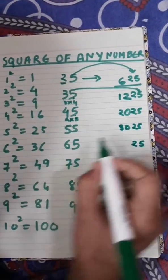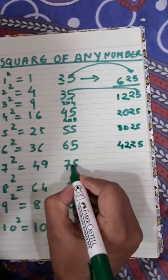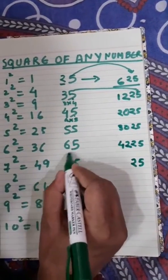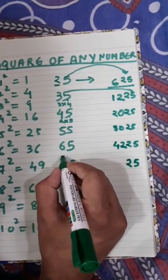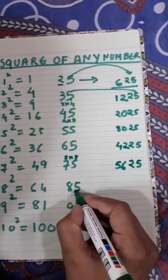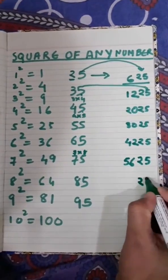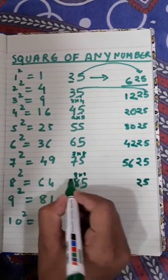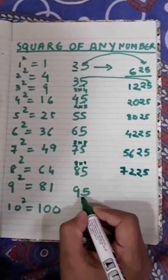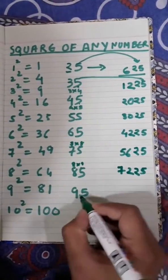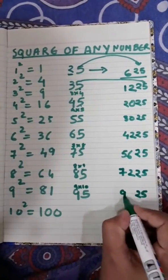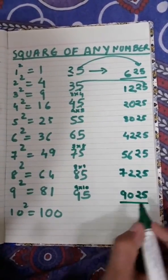For 65: write 25, then 6 × 7 = 42, giving 4225. For 75: write 25, then 7 × 8 = 56, giving 5625. For 85: write 25, then 8 × 9 = 72, giving 7225. For 95: write 25, then 9 × 10 = 90, giving 9025 as the square of 95.